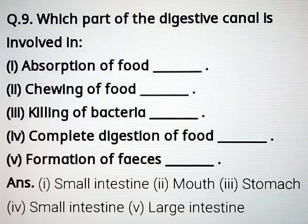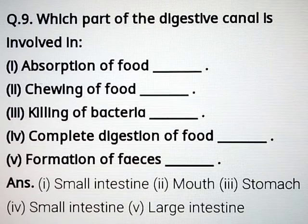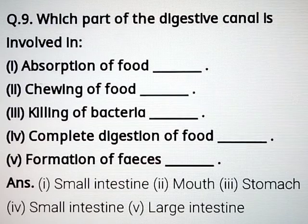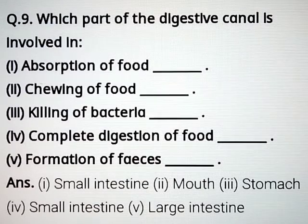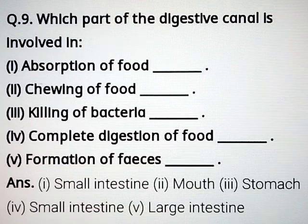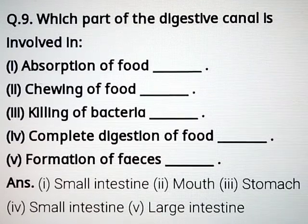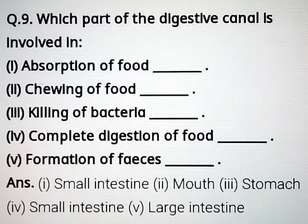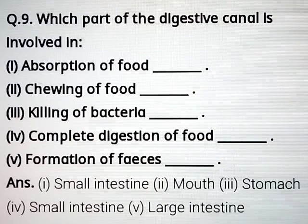Question number 9: which part of the digestive canal is involved in the following? Absorption of food — small intestine. Chewing of food — mouth. Killing of bacteria — stomach. Complete digestion of food — small intestine. Formation of feces — large intestine.